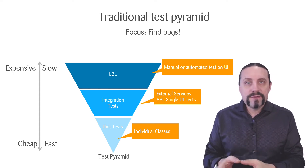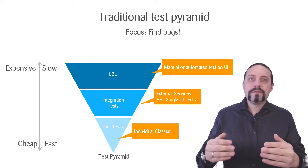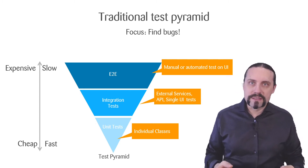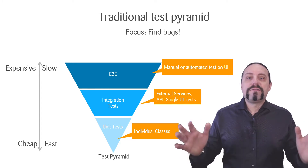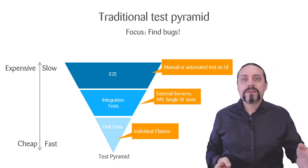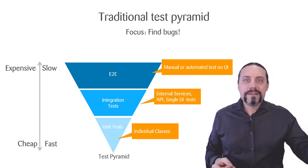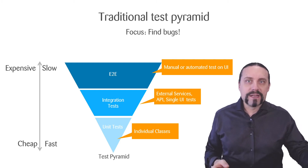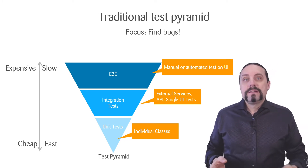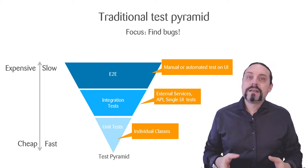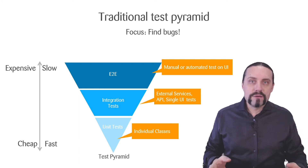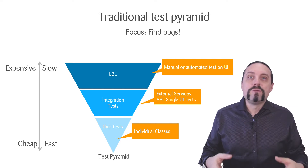In the traditional test pyramid, we only have a few unit tests done by the developer. Then we have a little bit more integration tests for external services, APIs, and single user interfaces. And we have a lot of end-to-end tests. This is caused by the V-model, because we do a lot of testing at the end when the feature has been implemented — and we do these tests manually, executing all of the test cases.